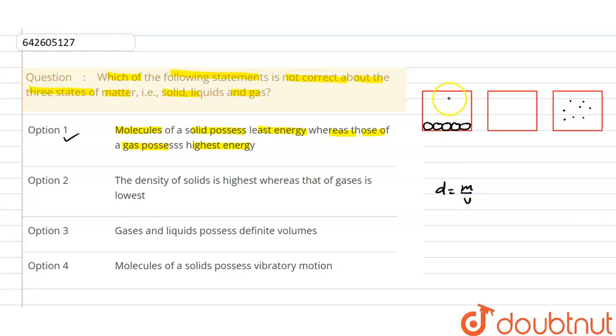volume. So if volume is same, here also one liter, here also one liter volume is taken. If we take one liter in both the containers then here mass will be greater because in case of solid